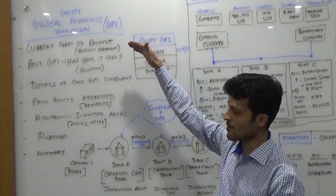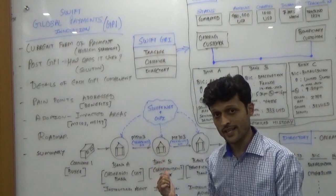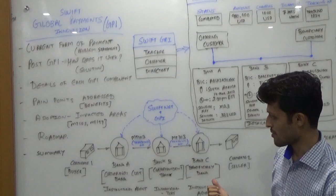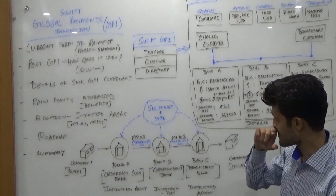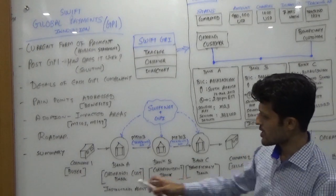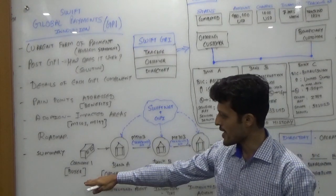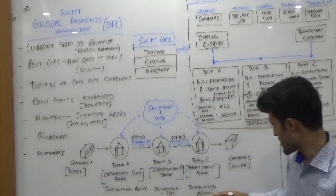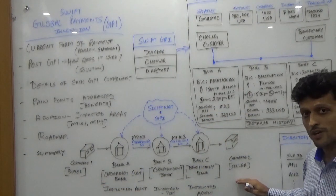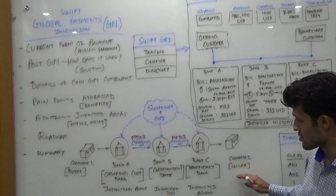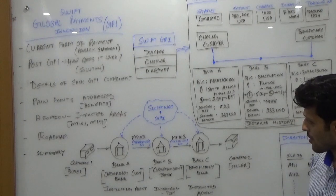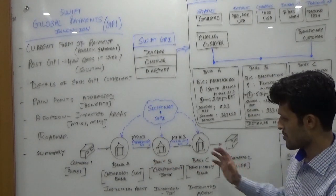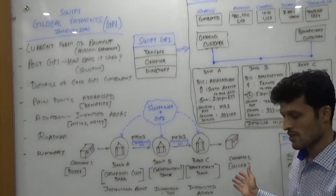I will start with the current form of payment — how it exactly works right now in the payment domain. Consider a buyer who is residing in South Africa, and there is a seller in the USA, the United States of America. The buyer requests from the seller some goods of a certain quantity and quality.